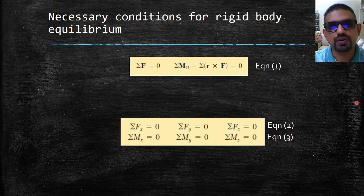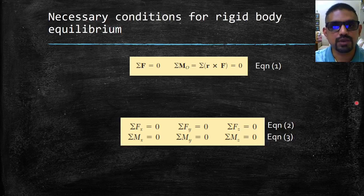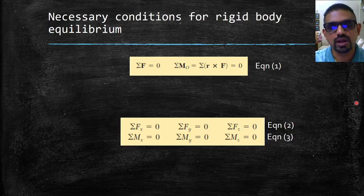Therefore, for a rigid body in equilibrium, the system of external forces will impart no translational or rotational motion to the body considered.